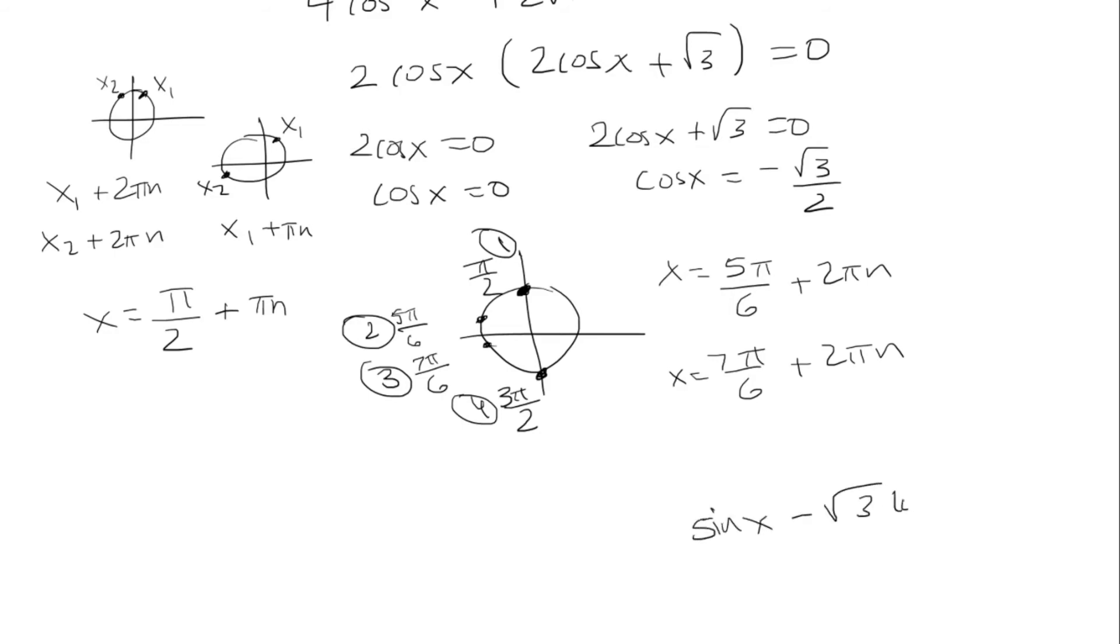So if I plug in pi over 2, sine of pi over 2 is 1, and then cosine of pi over 2 is 0, so that's just 0 equals 1. Okay, that one worked. So we're going to keep this.